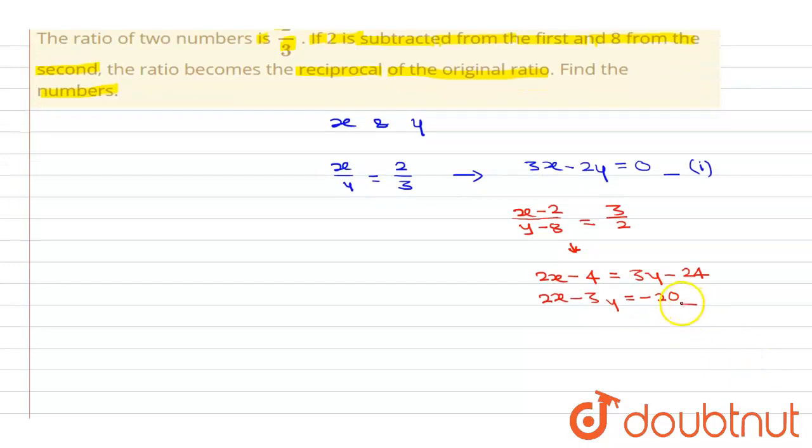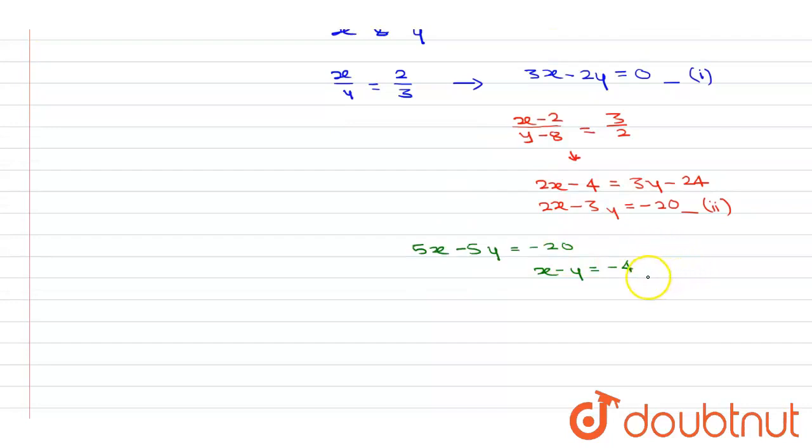Let us say this is our second equation. Now adding these 2 equations will get us 5x minus 5y is equal to minus 20. Taking 5, dividing both sides by 5 we get x minus y is equal to minus 4. This is our equation 3.